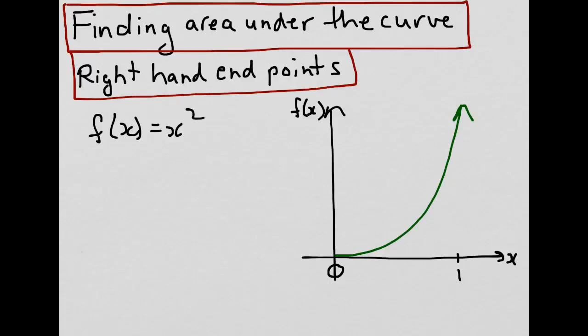One way to do this is to break our interval into a series of subintervals. Let's say we'll break it up into four equal subintervals — at one quarter, one half, and three quarters — giving us four subintervals over the interval 0 to 1.